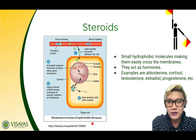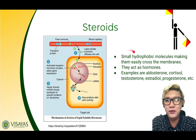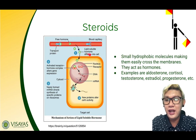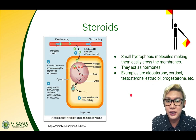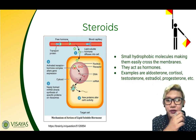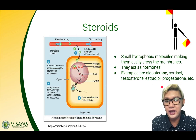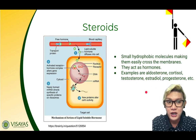Another type of signaling molecule are steroids. These are small hydrophobic molecules, which is why they can easily cross membranes — because they are hydrophobic and membranes are non-polar. They act as hormones and are sometimes called steroid hormones. Examples are aldosterone, cortisol, testosterone, estradiol, and progesterone. Testosterone and progesterone are responsible for male and female development during puberty and also the production of egg and sperm cells.